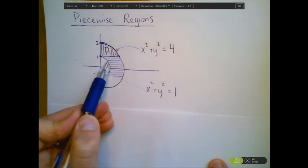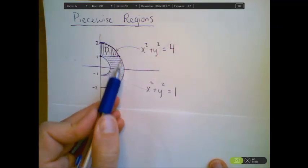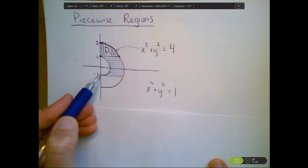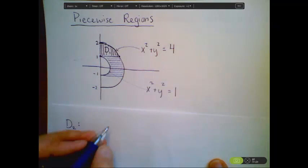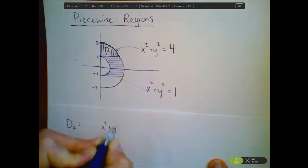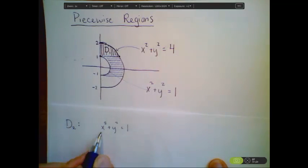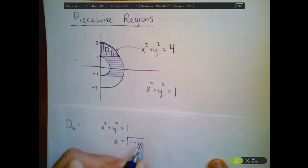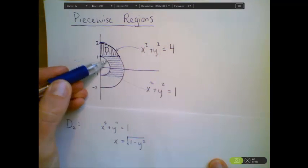So D2, in this case, my x values are bounded by functions, and my x values are bounded from this smaller circle to the bigger circle. So let's solve each of these circles for x. We know that x squared plus y squared equals 1. That means that x is equal to the square root of 1 minus y squared. And that's the left-hand bound.